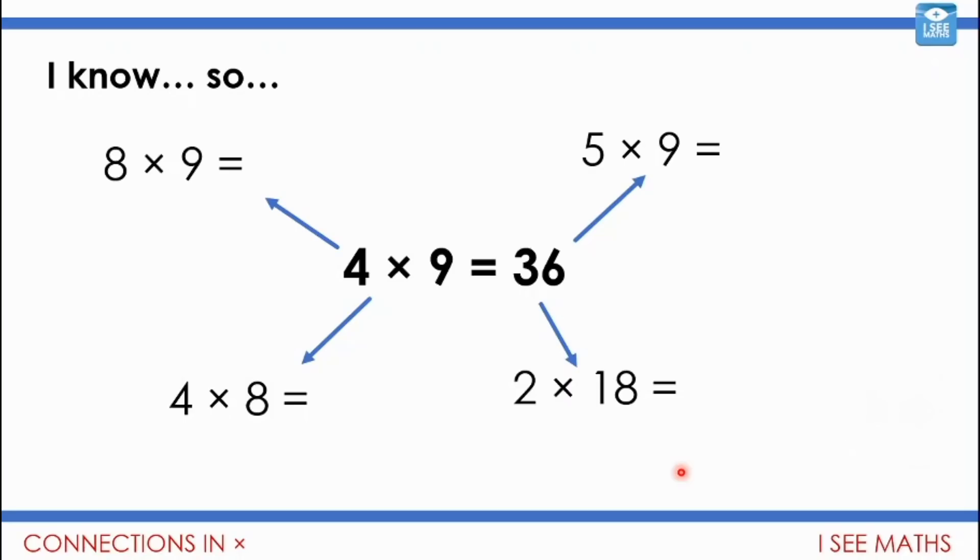Okay, well let's have a look. Now what's the link here? Well four times nine, it's still, I'm multiplying by nine, but this time it's eight lots of nine, not four lots of nine. Can you see this is doubled? And the answer is actually double 36, it's 72. So I can use four nines to work out, to derive eight nines.